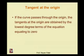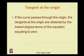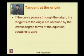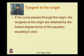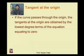Tangent at the origin: if the curve passes through the origin, the tangents at the origin are obtained by equating the lowest degree term of the equation to zero. For example, for y² = 4x, the lowest degree term is 4x, set equal to zero, giving x = 0, meaning the y-axis is the tangent.